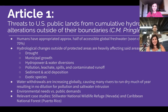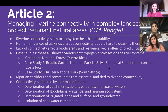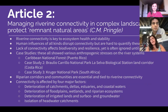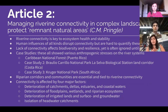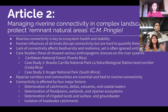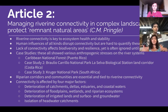All right, so that's article one. The next article is also by C.M. Pringle — 'Managing Riverine Connectivity in Complex Landscapes to Protect Remnant Natural Areas.' These two articles actually had a lot of overlap. Most importantly, riverine connectivity is key to ecosystem health and stability — meaning how rivers are connected through streams, wetlands, coastal habitats, marshes, swamps, deltas, floodplains. They could have the same groundwater source. All of this connectivity is really, really important.